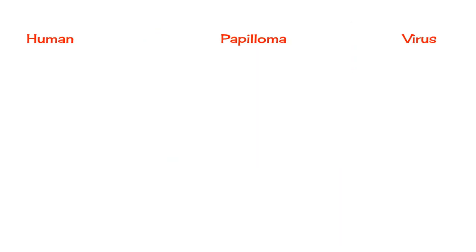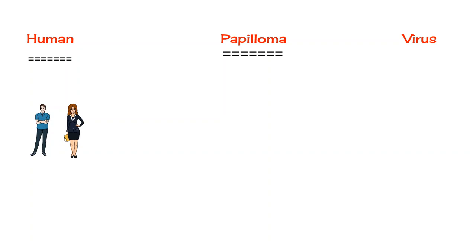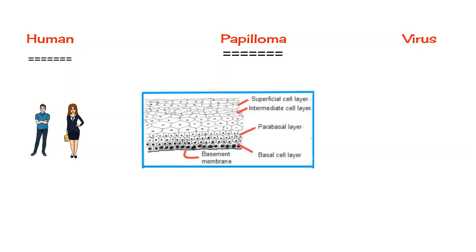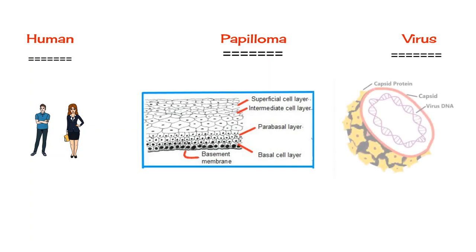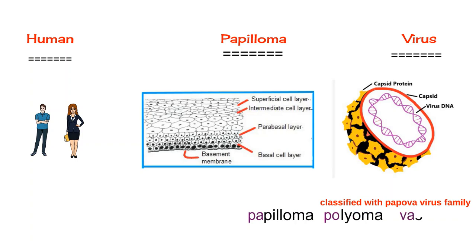Starting with the name: Human — because these species infect humans only. Papilloma — because these species are infected epithelial cell viruses. It is composed of double-stranded DNA, present as a supercoiled covalently closed circle with an icosahedral capsid composed of one major structural protein. HPV is classified within the Papovavirus family, standing for papilloma, polyoma, and vacuolating virus.